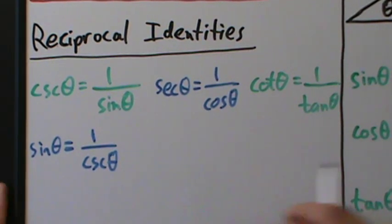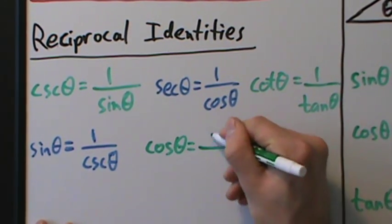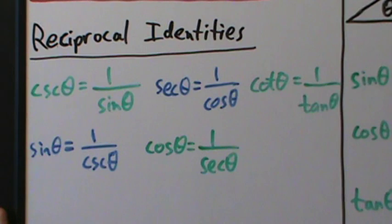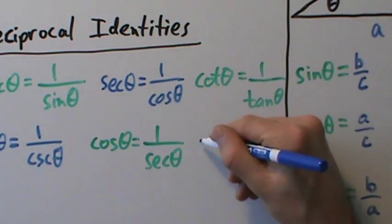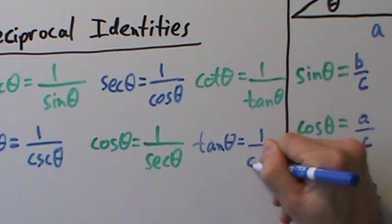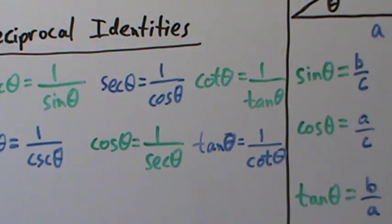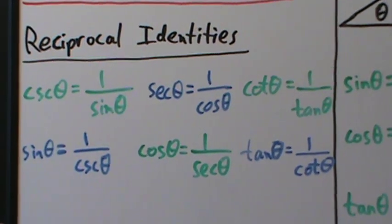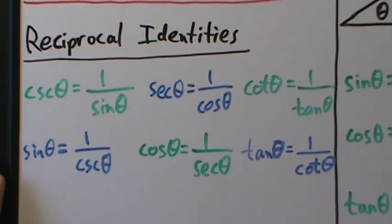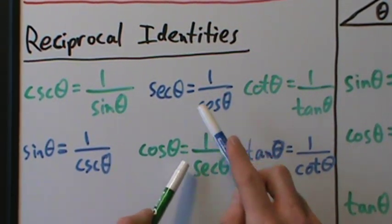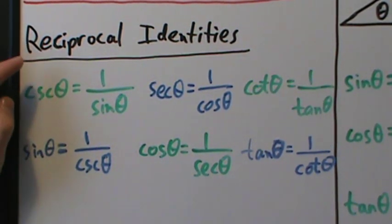Likewise, cosine of theta is the reciprocal of the secant of theta, and the tangent of theta is the reciprocal of the cotangent of theta. So these are the six reciprocal identities. Technically there are really only three, because each pair says exactly the same thing. But these are what are called the reciprocal identities.